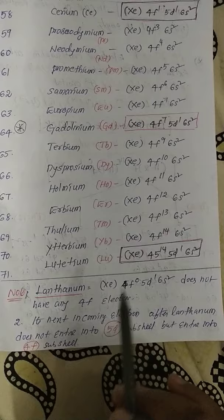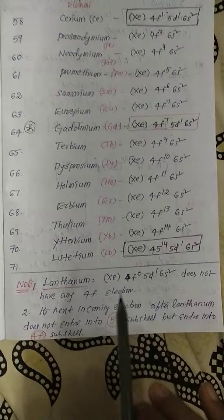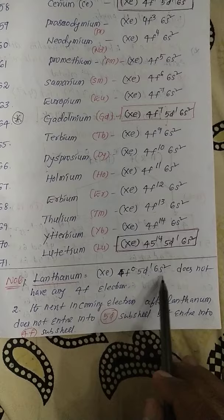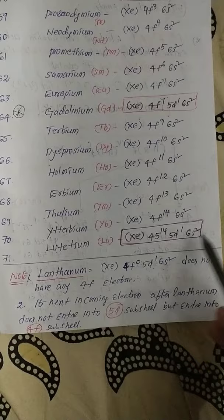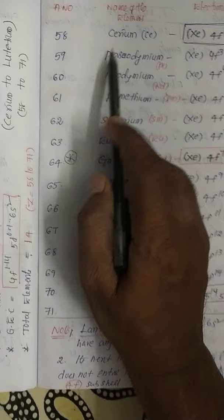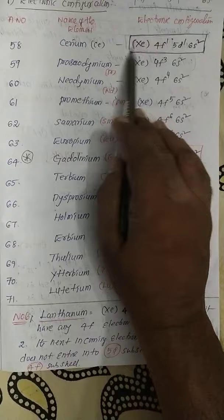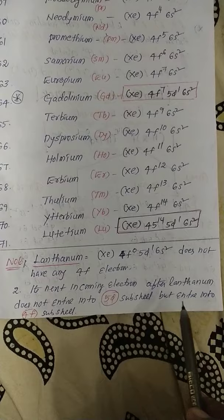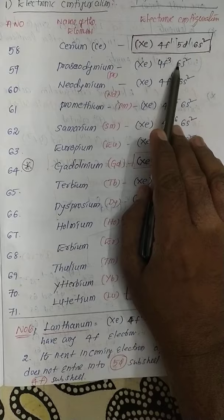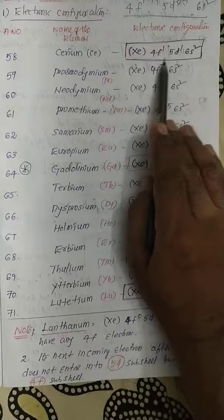After lanthanum (4f⁰), the next incoming electron in cerium does not enter the 5d orbital — this is an exceptional case. Instead, it enters the 4f subshell. From praseodymium onwards, electrons after 6s² directly enter the 4f orbital, not the 5d, which is why lanthanides belong to the 4f block.